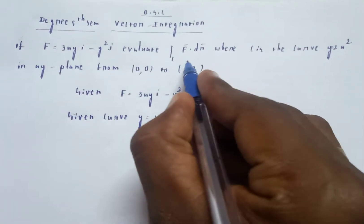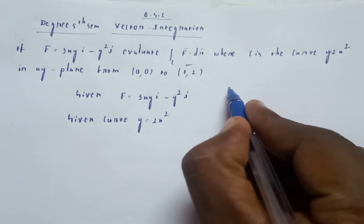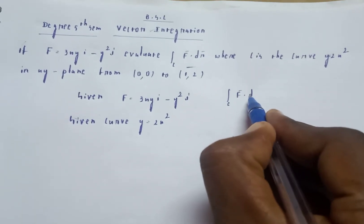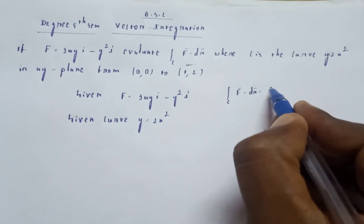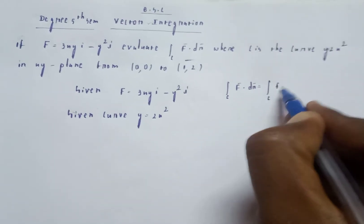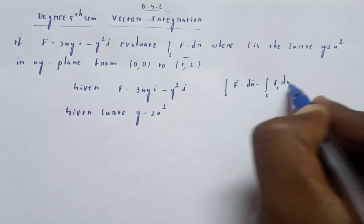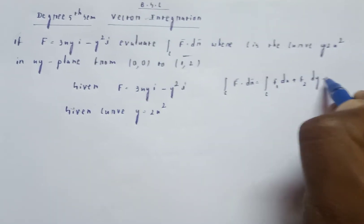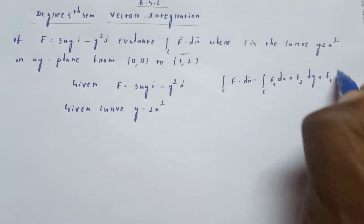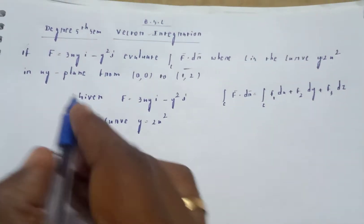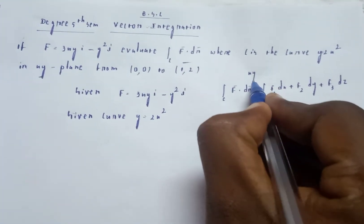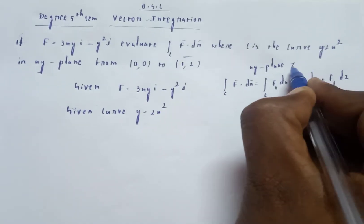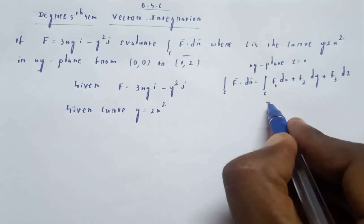Now let's look at integral c F·dr. The formula is: integral c F·dr equals integral c f1 dx plus f2 dy plus f3 dz. Since the problem is in the xy plane, z is equal to 0.